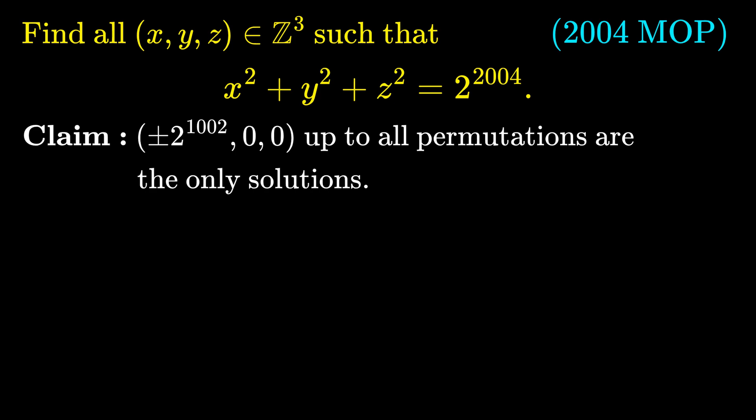To begin, I will show a lemma, which is that x, y, and z must be even integers. We note that one of them must be even. Let's say it is x, because otherwise, if x, y, and z are odd, we have 3 odd integers but the right-hand side is even, which can't happen.